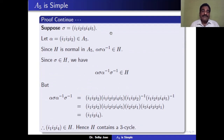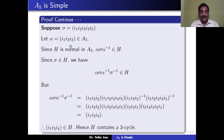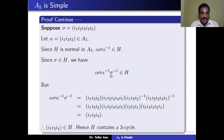Suppose σ is a 5-cycle of the form (i1, i2, i3, i4, i5). Choose the 3-cycle α = (i1, i3, i2). Since any 3-cycle is an even permutation, α belongs to A5. Since σ is in H and α is in A5, and H is a normal subgroup of A5, then α σ α⁻¹ is in H. Therefore α σ α⁻¹ · σ⁻¹ also belongs to H, because σ⁻¹ is in H and H is a subgroup.